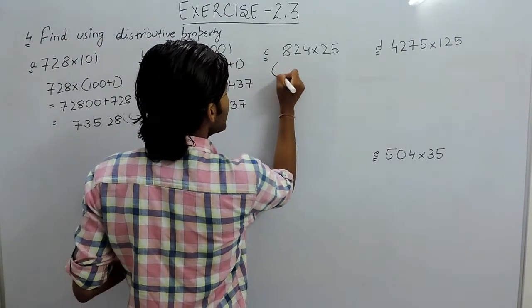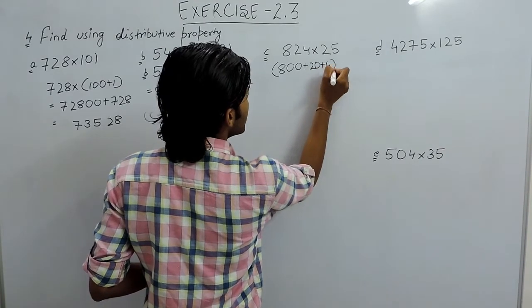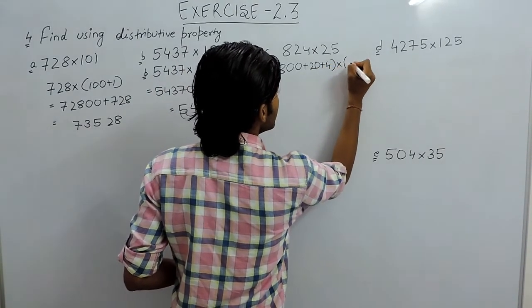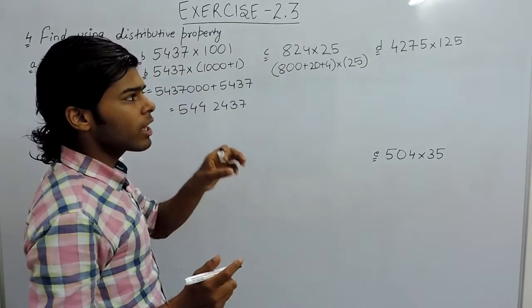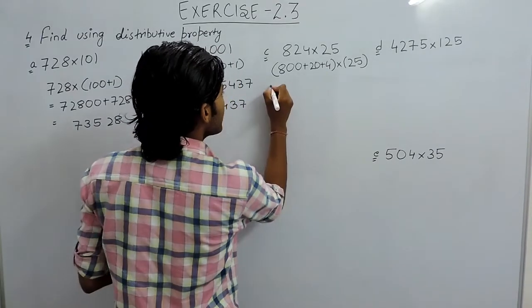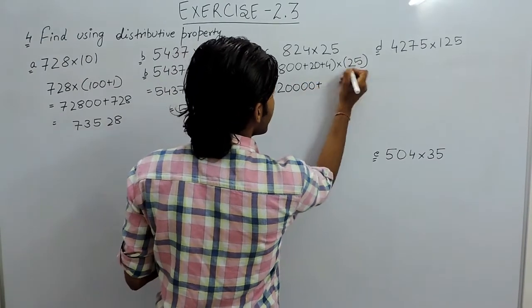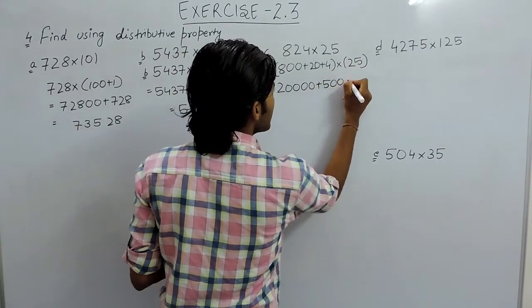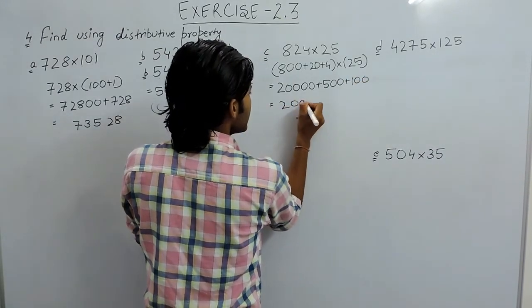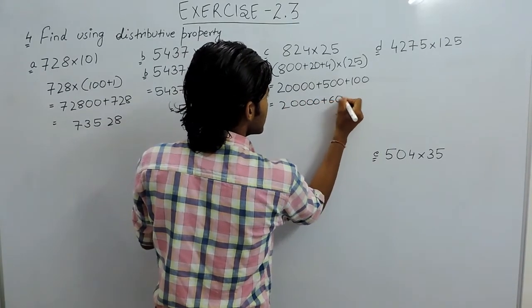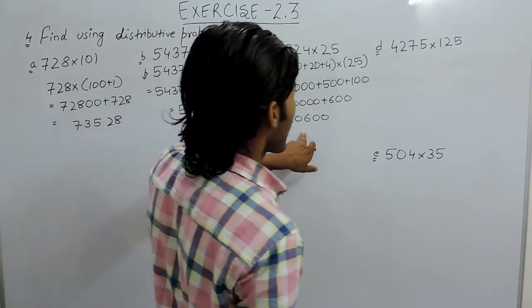In part C we can write this to be 800 plus 20 plus 4 multiplied with 25. We know that 25 multiplied by 4 gives 100, so 25 multiplied with 8 will give you 200 along 2 zeros plus 25 plus 50 along with 1 zero plus 25 equals 100. So all together 20000 plus 600, so this will be 20600. Answer of part C.